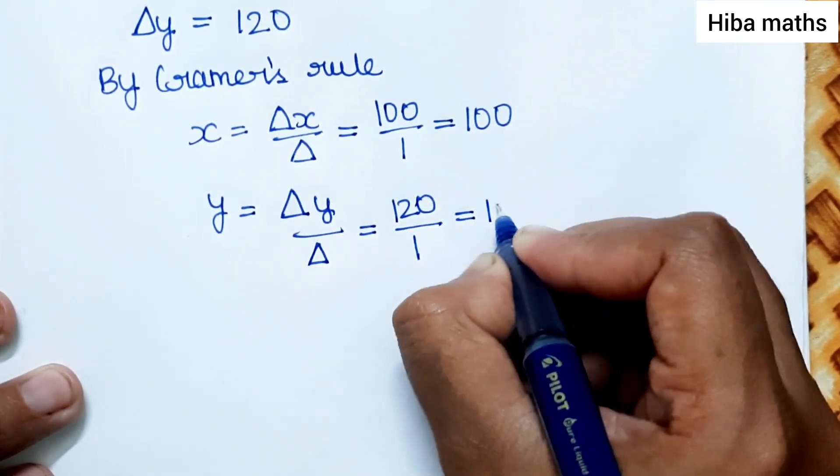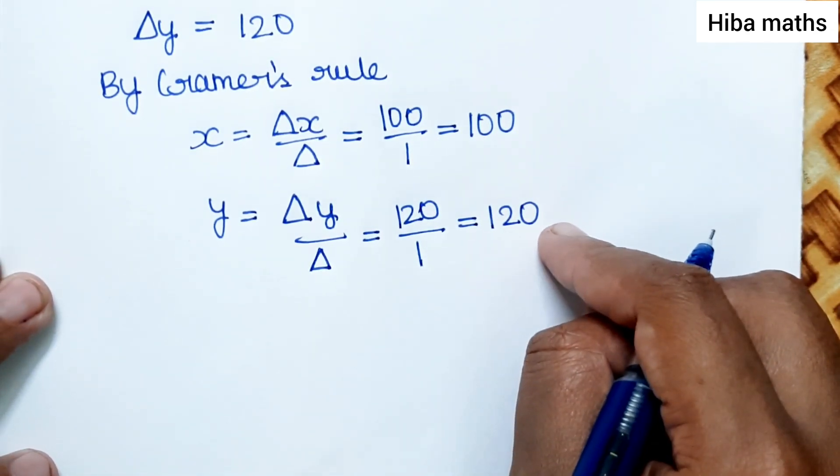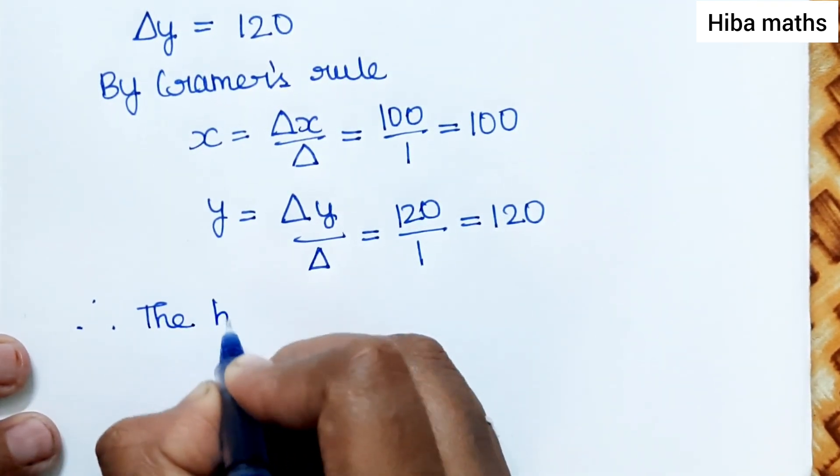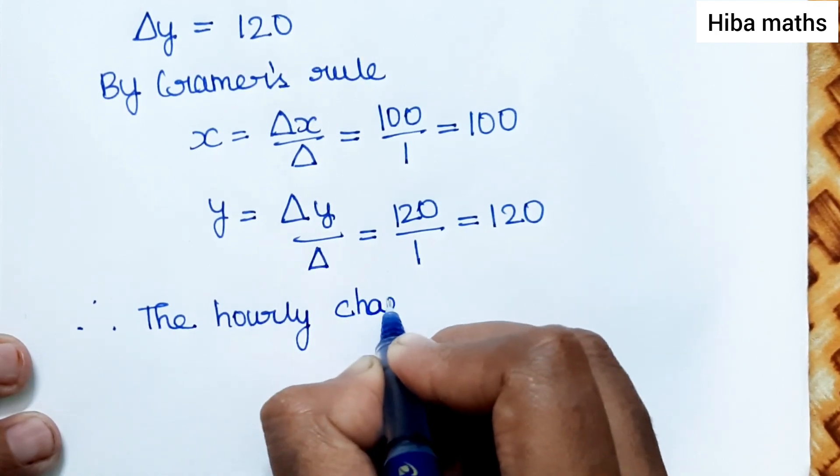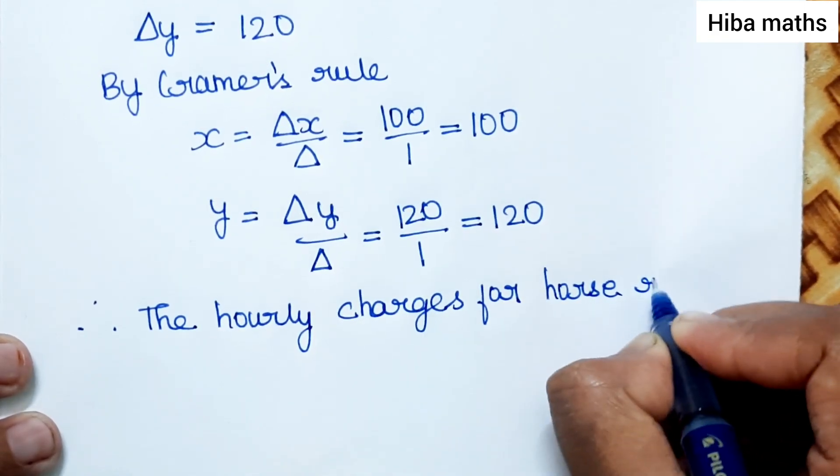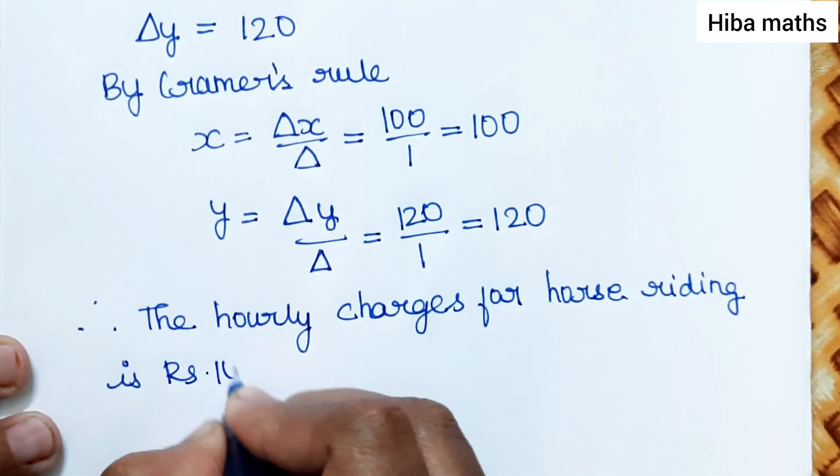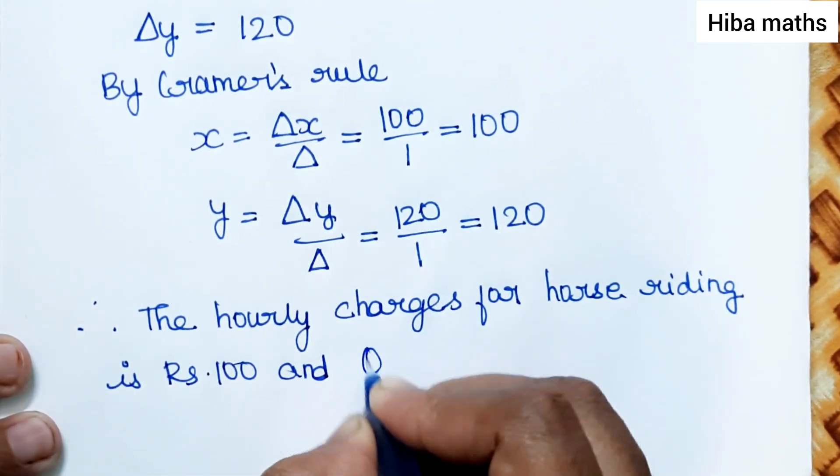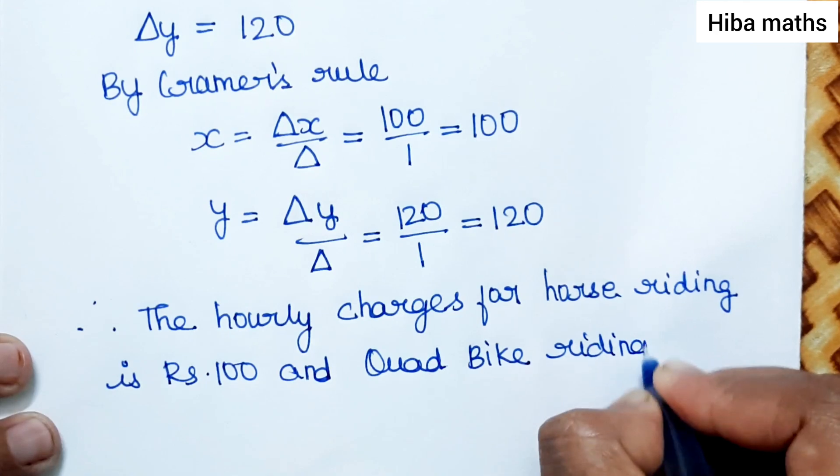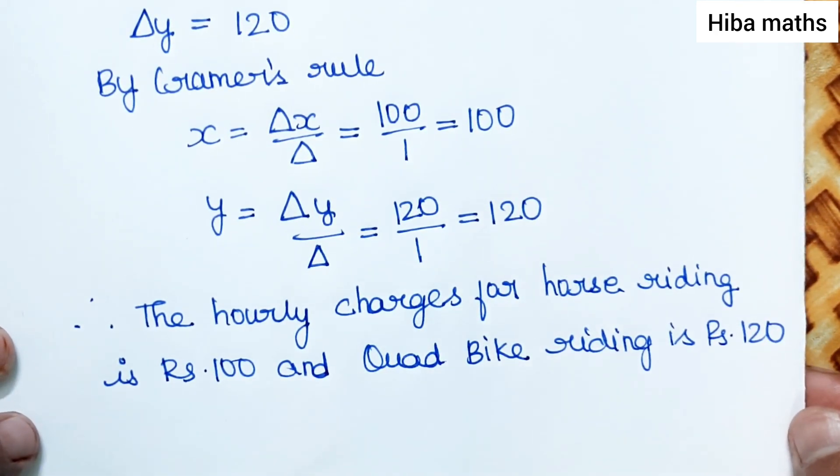Therefore, the hourly charges for horse riding is rupees 100 and quad bike riding is rupees 120. Thank you so much for watching.